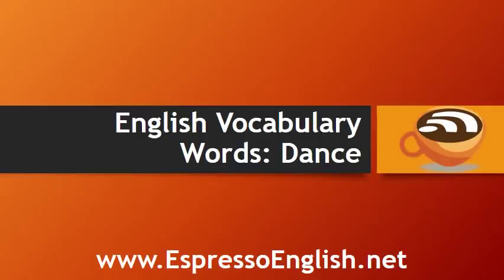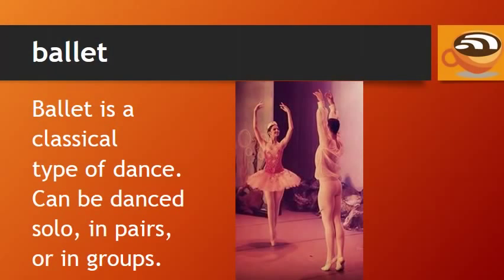English vocabulary words for dance from EspressoEnglish.net. Ballet is a classical type of dance. It can be danced solo, in pairs, or in groups. The T in ballet is silent.